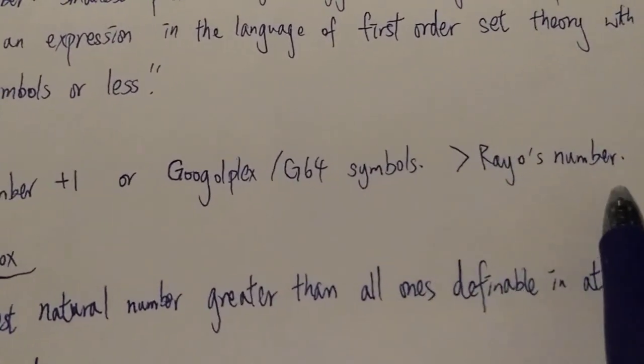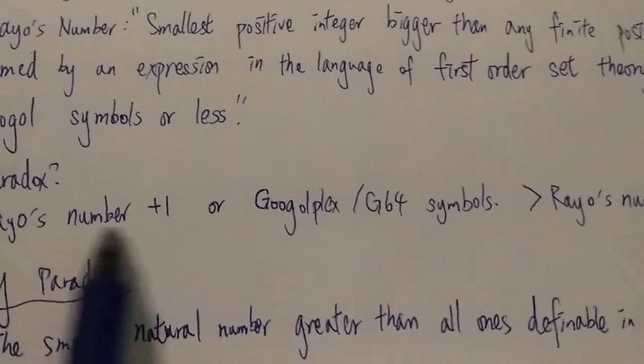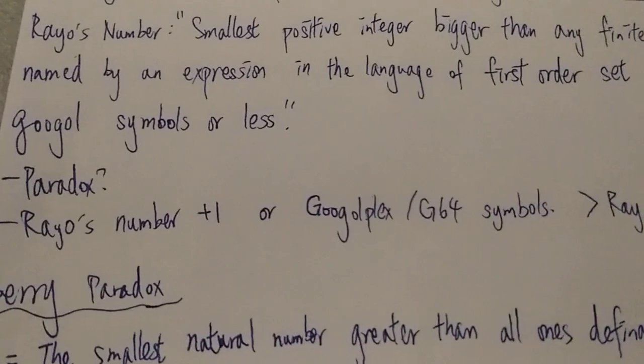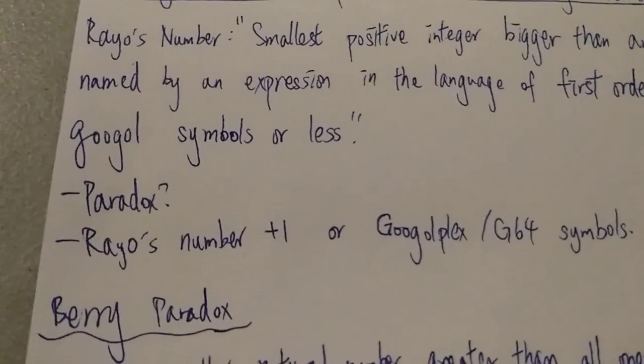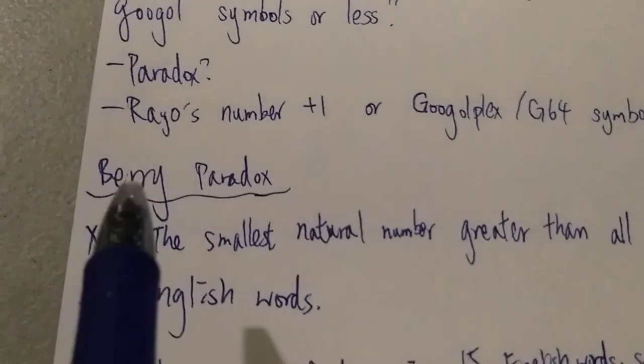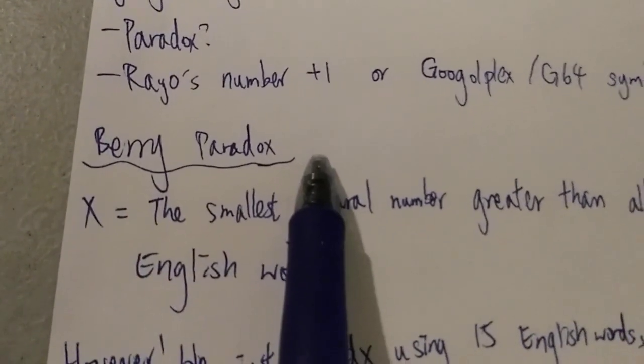So they're saying, oh this is a paradox. I mean you can easily define a new number bigger than Rayo's number using just a few symbols. So what is it about? And now let's take a quick look at the Barry's paradox.